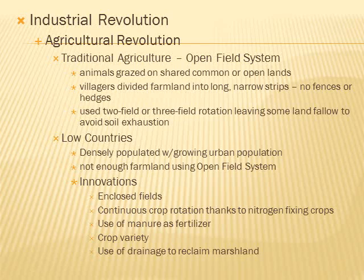One of the forces challenging conservatism was the Industrial Revolution. First, there was an agricultural revolution. Traditional agriculture used an open field system — animals grazed on shared common lands, villagers divided farmland into long narrow strips with no fences, using two or three field rotation and leaving some land fallow to avoid soil exhaustion. The Low Countries — Netherlands, Belgium, Luxembourg — being densely populated, didn't have enough farmland using the open field system. So they began enclosing fields, using continuous crop rotation with nitrogen-fixing crops, using manure as fertilizer, emphasizing crop variety, and draining marshy land for more farmland.